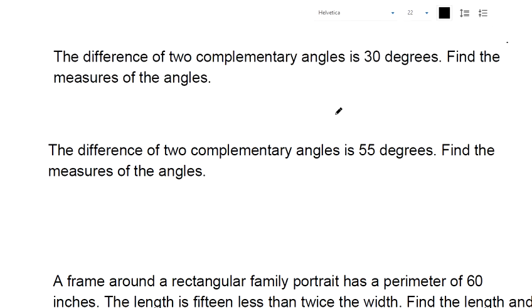The difference of two complementary angles is 30 degrees. Find the measures of the angles. There's two angles we don't know because there's two complementary angles. We'll call them x and y. If they're complementary, that means you can add them and they make 90 degrees. And they said the difference, that just means if you subtract them, it makes 30 degrees.